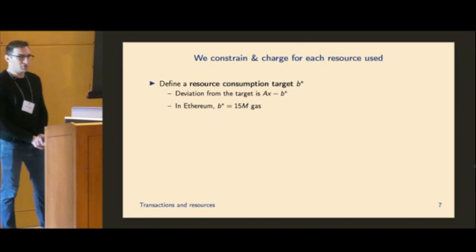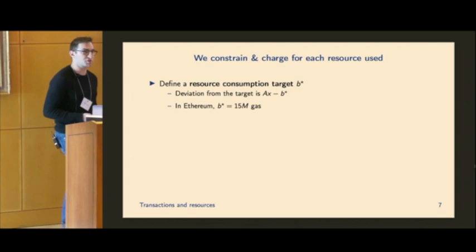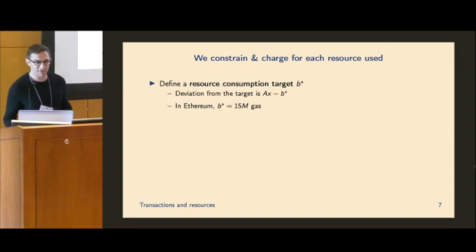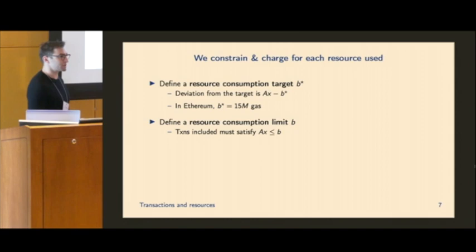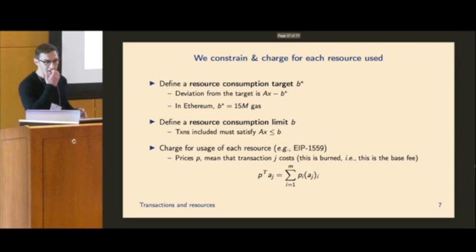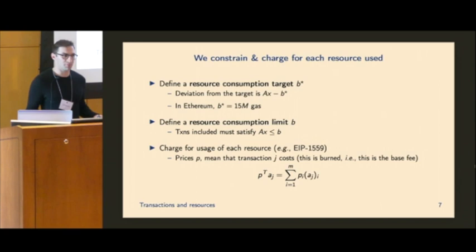All right. So what we can do is we want to say constrain and charge for each resource used. So we're going to define a resource consumption target. So this is basically the amount of each resource we want in the block. In Ethereum, this is 15 million gas. And we can think of this as kind of the steady state of the blockchain system. So this is like kind of the nominal resource usage we want. We also have some type of resource limit. So this is going to be maybe like the burst capacity. So in Ethereum, this is 30 million gas. But you can imagine in a multidimensional setting, this is going to be a vector instead of a scalar.